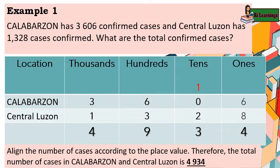Ones: 6 plus 8 equals 14; carry 1 over to tens. Tens: 1 plus 2 equals 3. Hundreds: 6 plus 3 equals 9. Thousands: 3 plus 1 equals 4. Therefore, the total number of confirmed cases in Calabarzone and Central Luzon is 4,934.